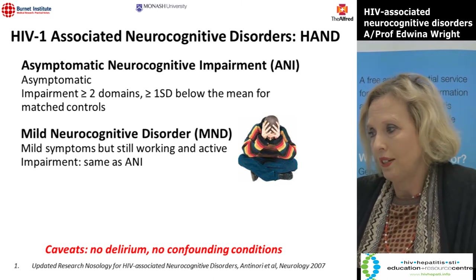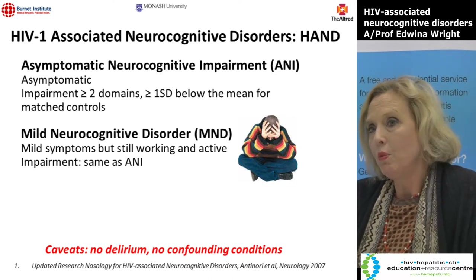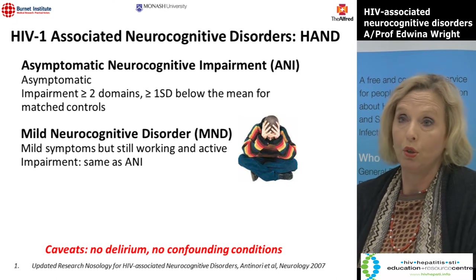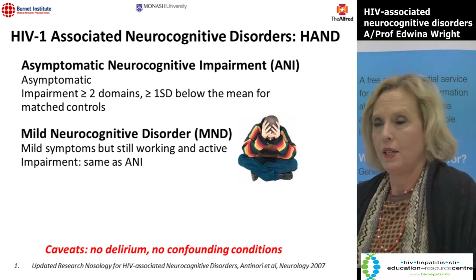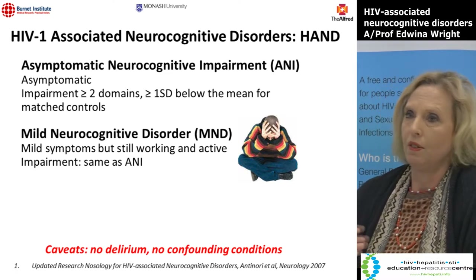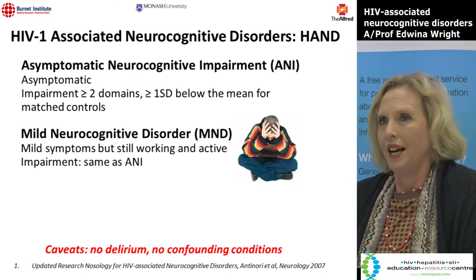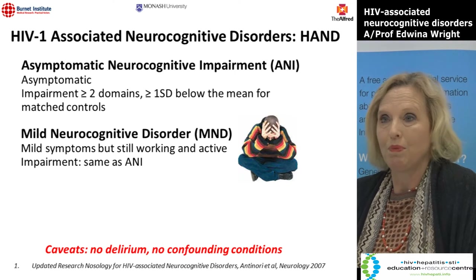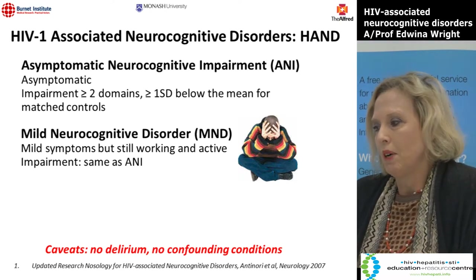Mild neurocognitive disorder is the second component of HAND, and I think that's what healthcare providers probably see the most of when working with people living with HIV. The individual has mild symptoms — they may still be working or running a household, but they are aware they're not on their game. They may have difficulty with executive decisions at work, balancing a budget, or if interrupted they go off track very easily. At home they might struggle to manage bills or keep everything running smoothly. People often adapt to these symptoms, and the healthcare practitioner may also adapt, finding the patient just a little less crisp.